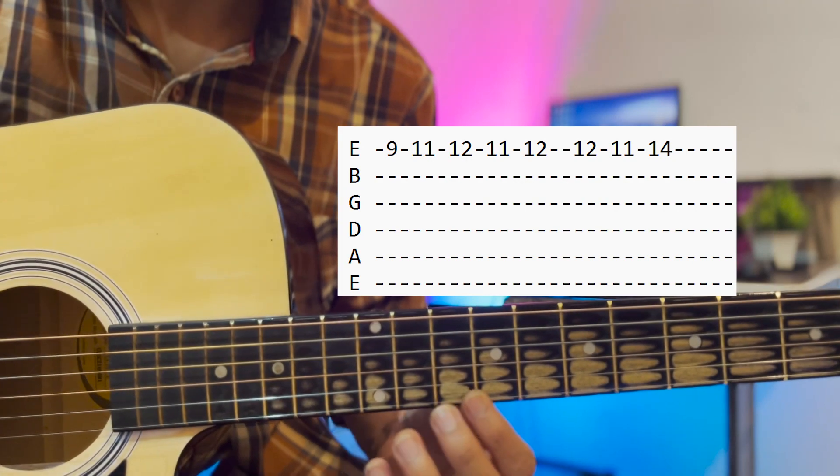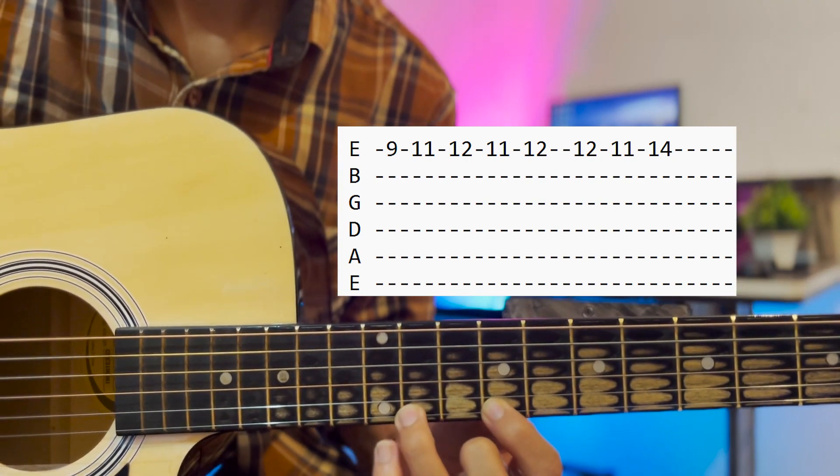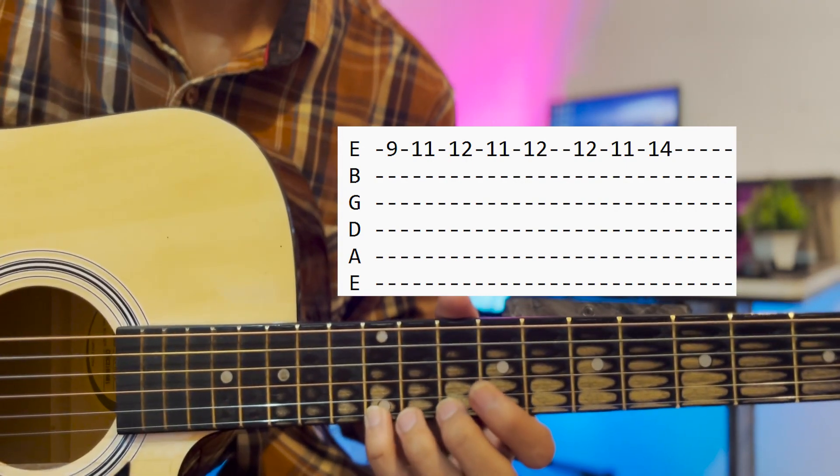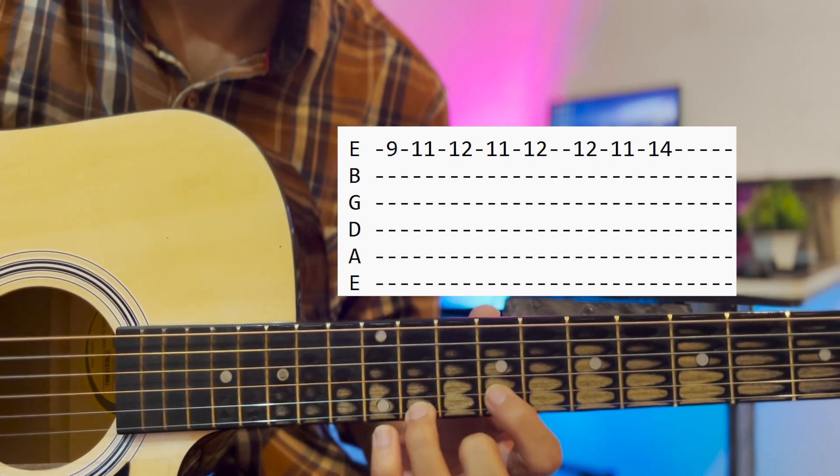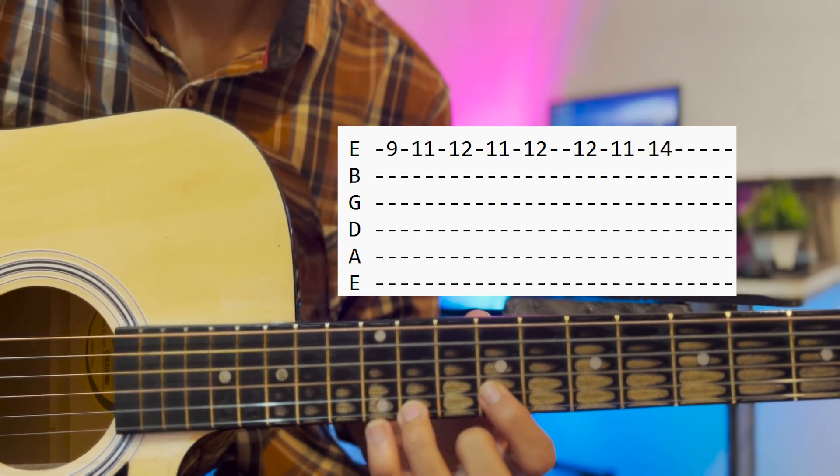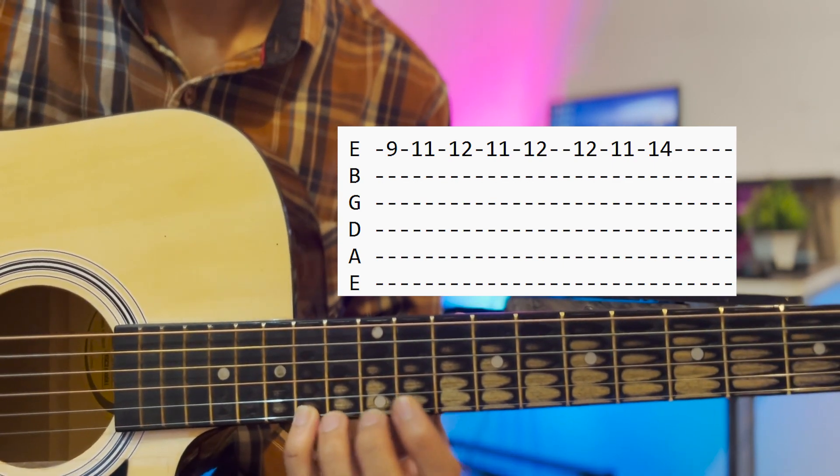First line starts from E9, E9, E11, E12, then again 11, 12, then 12, 11, 14.